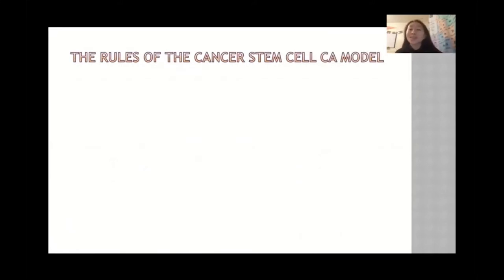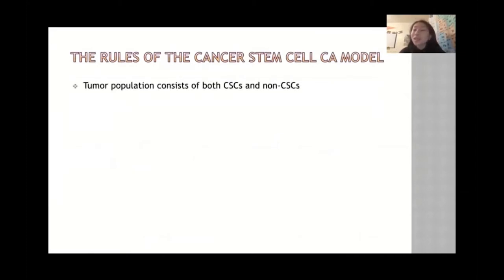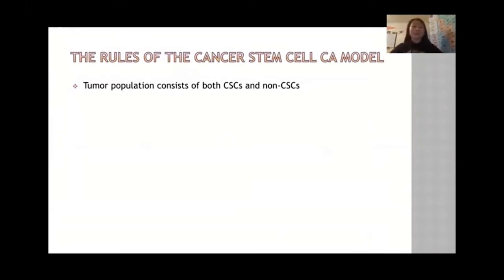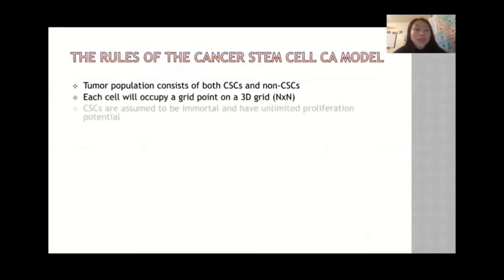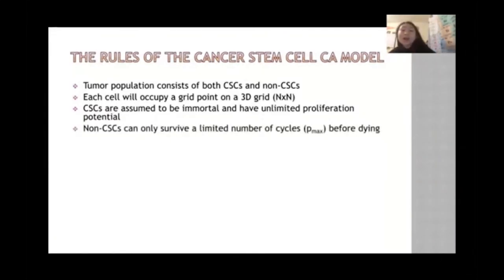The rules of the cancer stem cell cellular automata model: the tumor population consists of both cancer stem cells and non-cancer stem cells. Cancer stem cells are responsible for most proliferation while non-cancer stem cells are not. Each cell occupies a grid point on a 3D grid, and cancer stem cells are assumed to be immortal with unlimited proliferation potential. Non-cancer stem cells can only survive a limited number of cycles — p_max — before dying, so they have a finite lifespan.